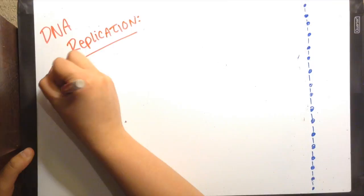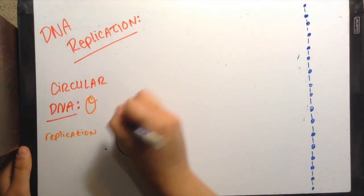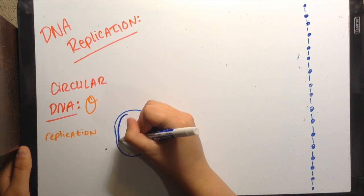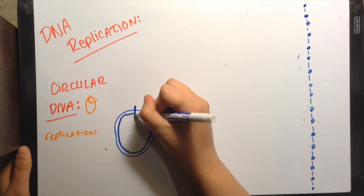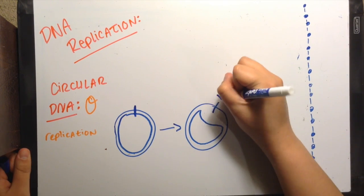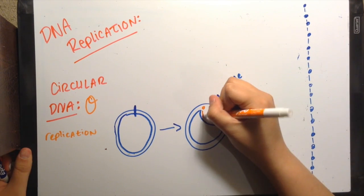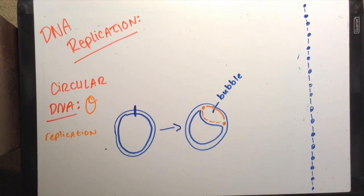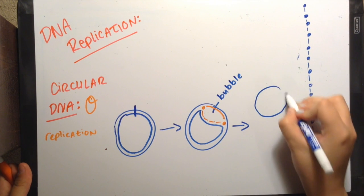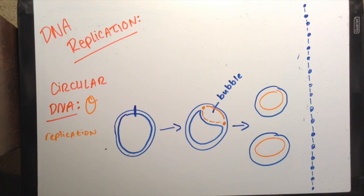DNA replication varies with some organisms. In circular DNA, theta replication occurs. The process is similar with an origin of replication and a replication fork, but the unwinding DNA forms a replication bubble. It can have one or both points unwinding at the same time. If there are two replication forks, it is called bidirectional replication. The end product is two circles with one old strand and one new strand.